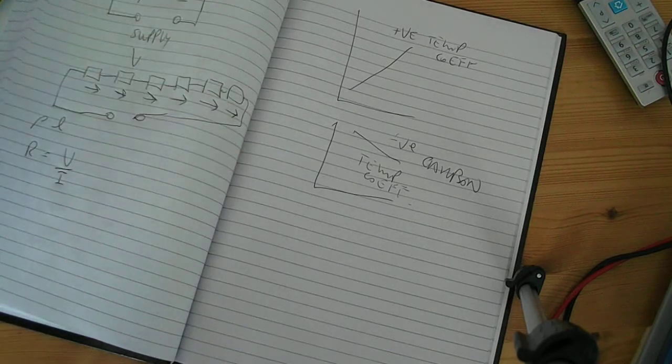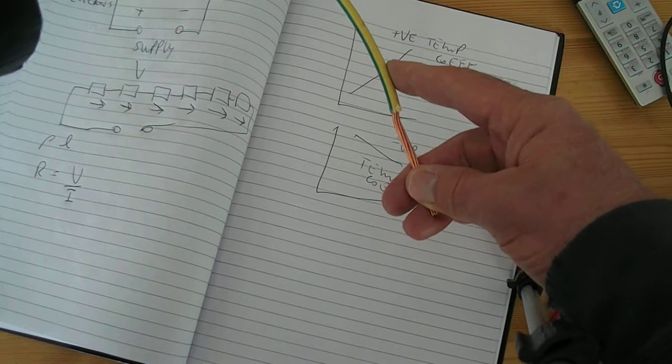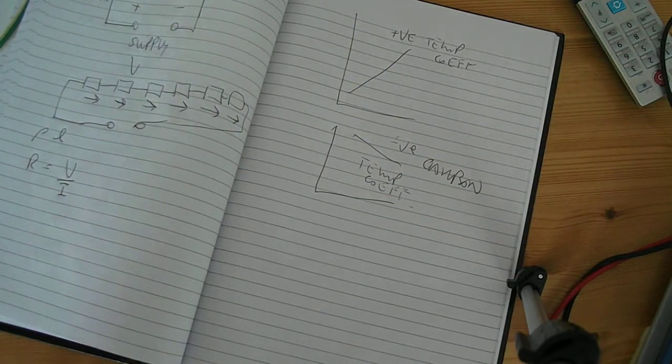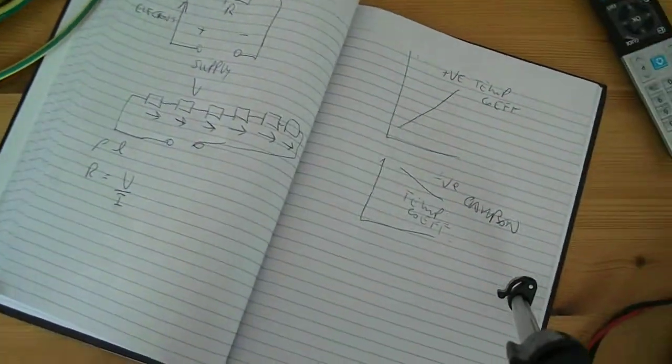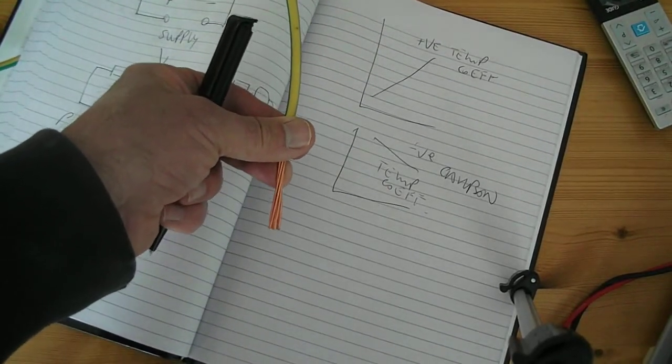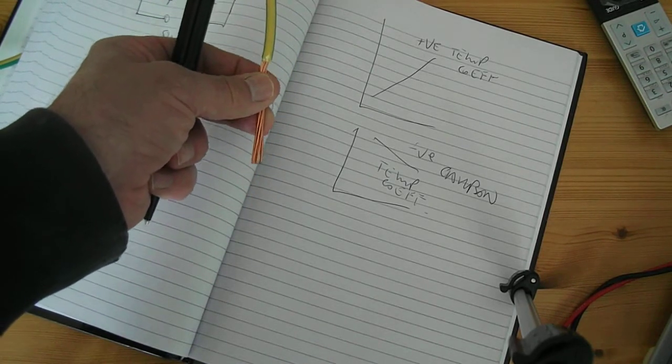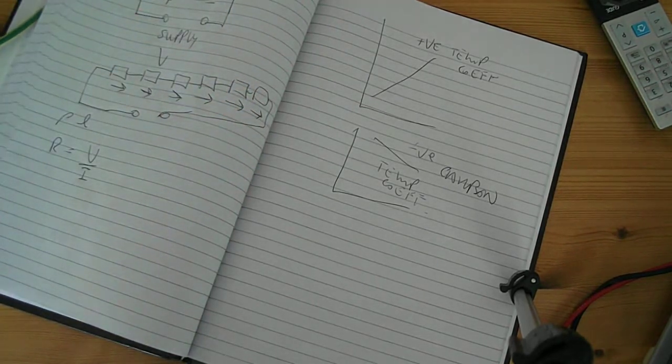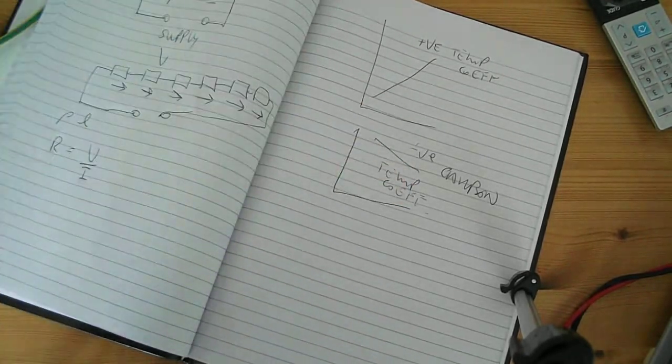When too much current goes through a cable, it produces a lot of heat. And this heat will set fire to the insulation and turn it into carbon. So it no longer becomes a very good insulator. It actually starts to conduct. And we don't want that. What you need to remember is, this is a negative temperature coefficient.